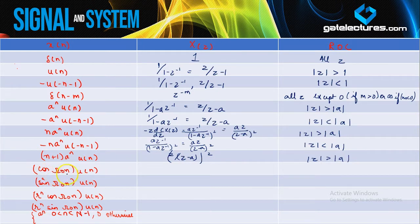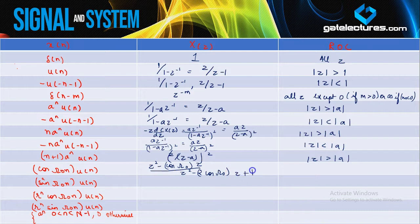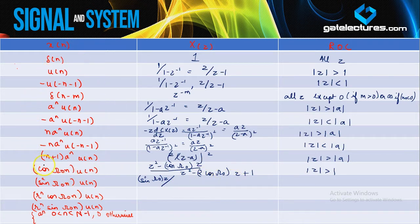For cos(ω₀n)u(n), you express it in terms of Euler's formula, then find the Z-transform. You get (z²−cos(ω₀)·z)/(z²−2cos(ω₀)·z+1). We are not performing these operations in detail right now. You can express these signals in terms of Euler's formula and calculate the Z-transform yourself. We are mostly not going to use Z-transforms of cosine/sine signals a lot in discrete time.